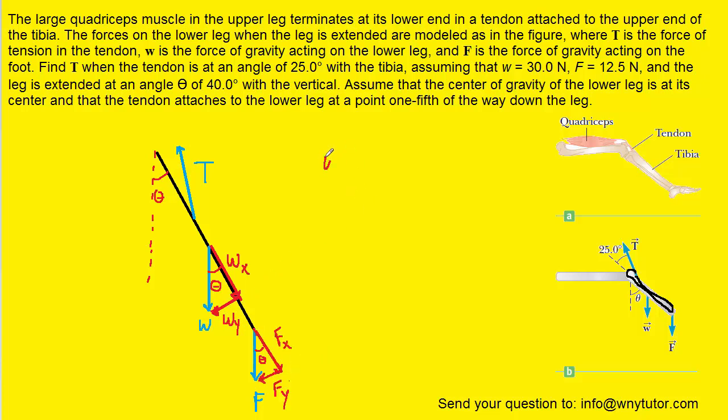Now off on the side, what we want to note is that wy, which again is the y component of the weight force, we'll notice that it's opposite from the angle marked theta. So we can actually use trigonometry to say that that's going to be w times the sine of the angle. Now w was given to us in the question as 30 newtons, and the angle theta was given as 40 degrees.